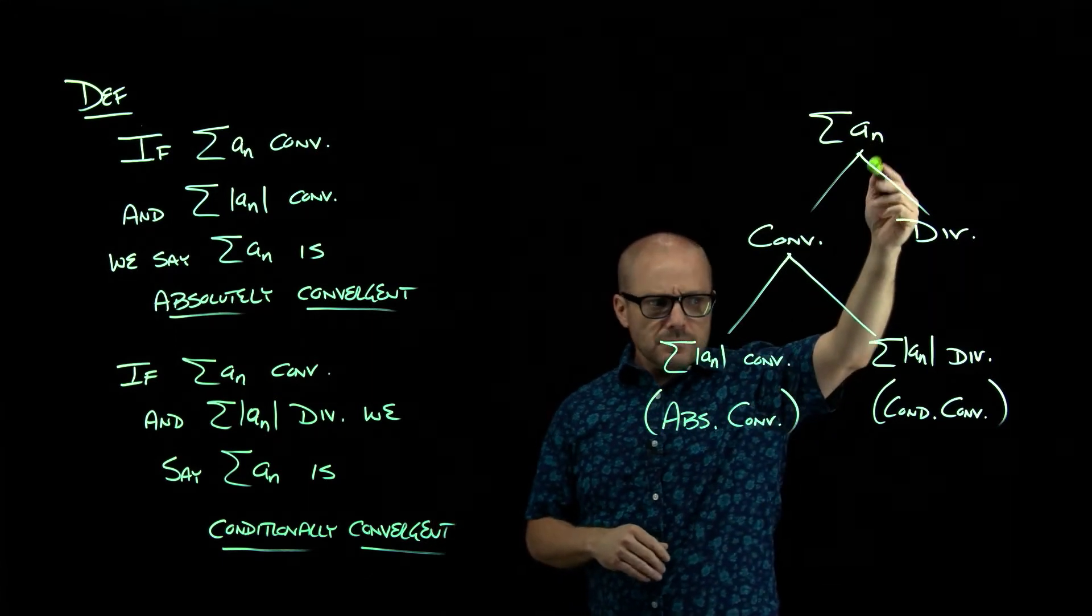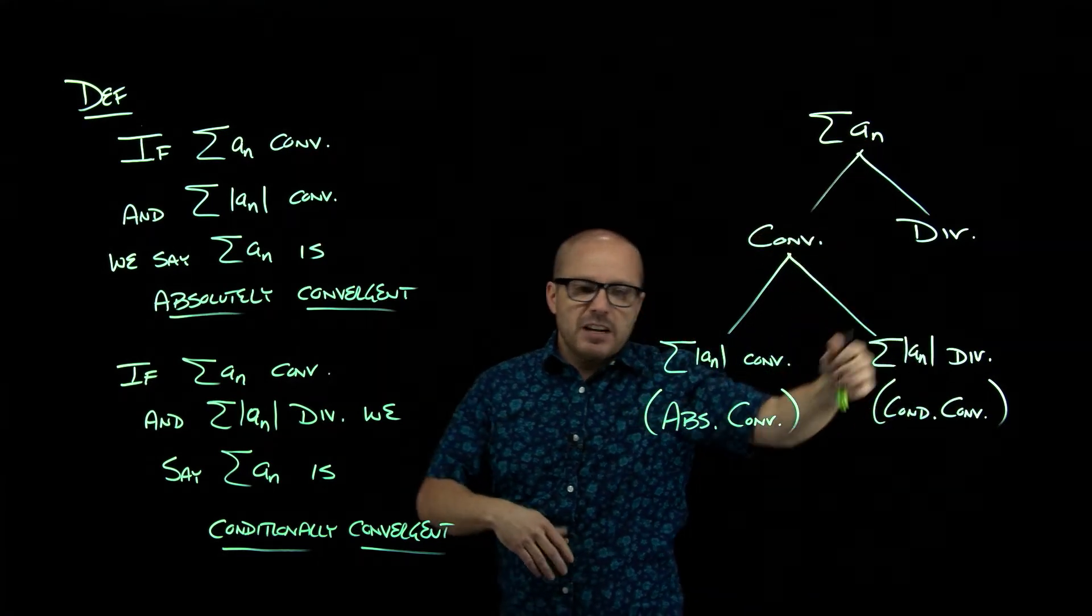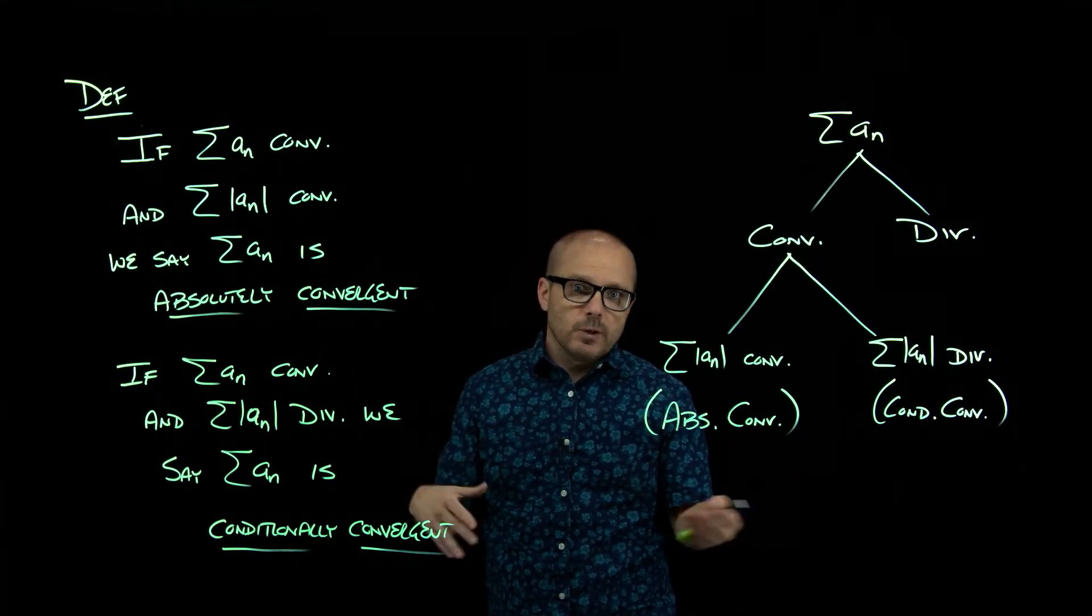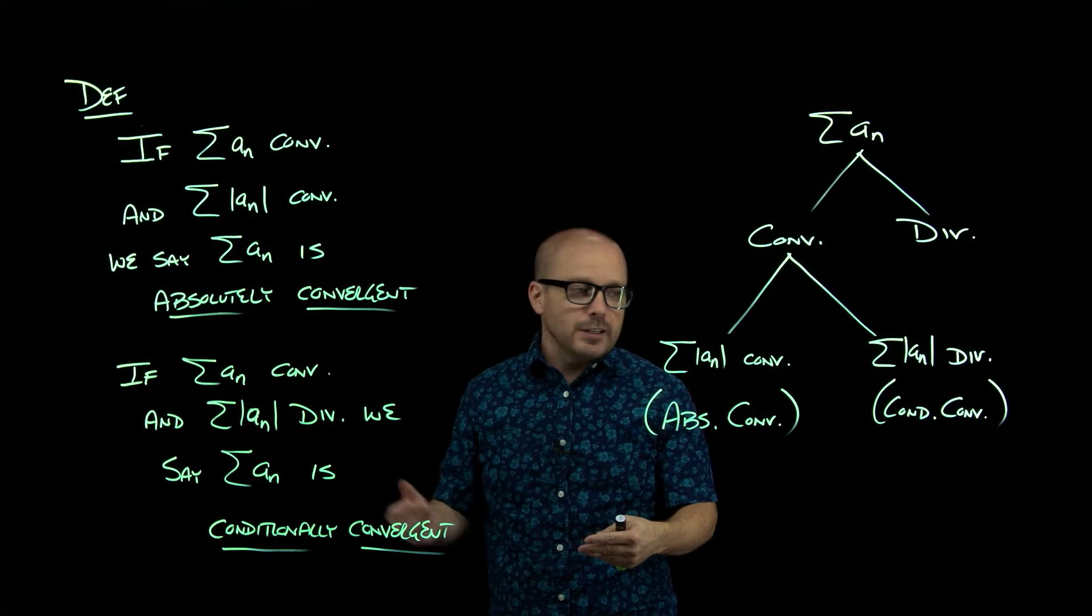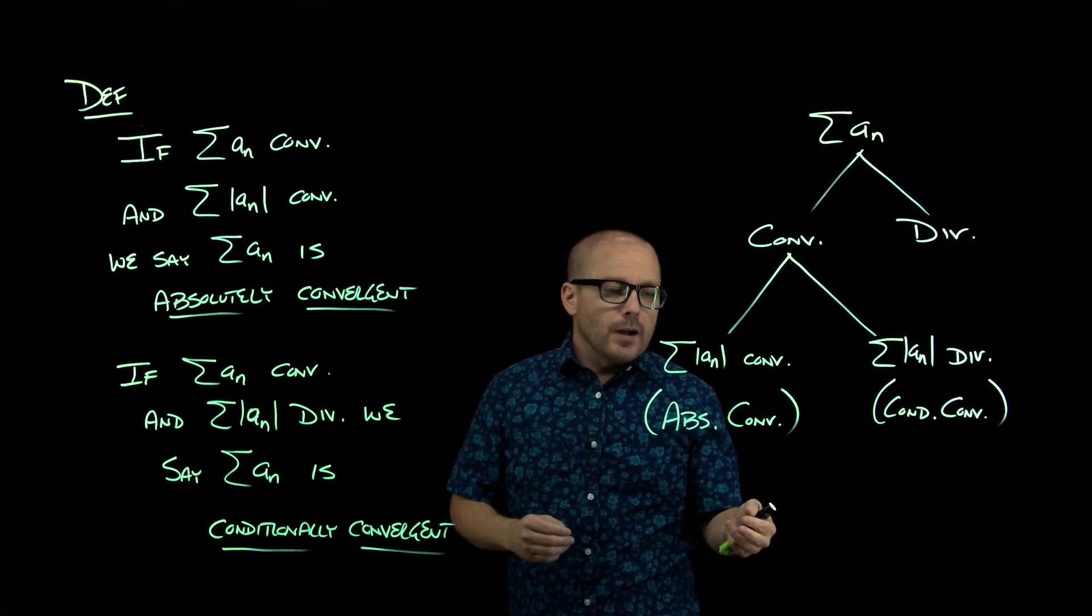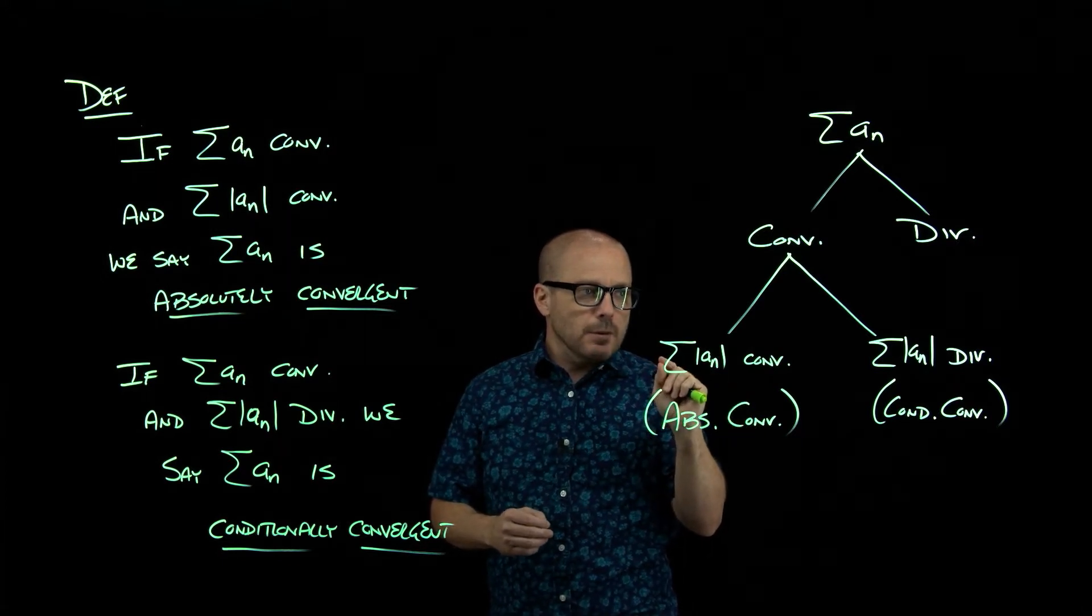But if it's conditionally convergent, if this adds up to five, I can rearrange the numbers so it adds up to six or a hundred or negative 15 or pi or e, or I think that is a little bit weird the first time you think about it.